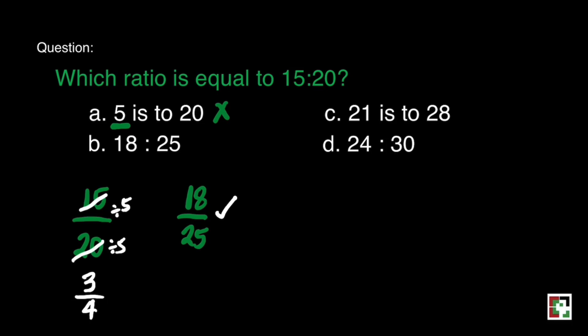Because 18 over 25 is already in lowest term. So if we're going to compare 3 fourths and 18 over 25, they are not equivalent. So letter B is not part of the list anymore.